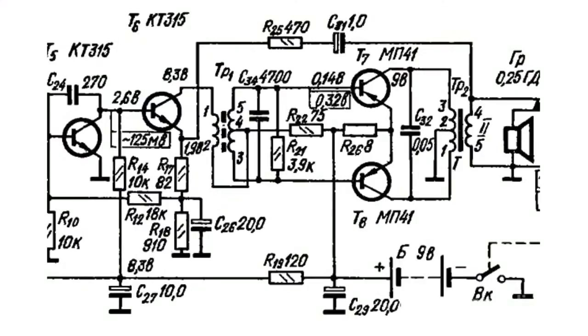Such cascades are called two-stroke output amplifiers. For most small-sized home appliances produced in our country and abroad, transformers have been used.